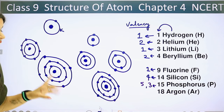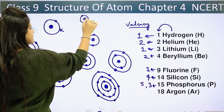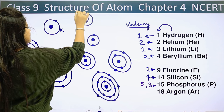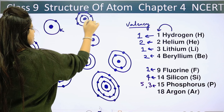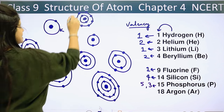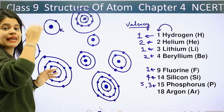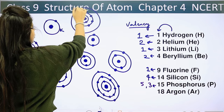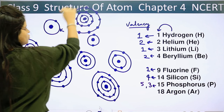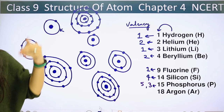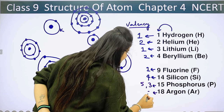Last, we have argon with atomic number 18. This is the nucleus. The first shell takes 2 electrons, the second shell takes 8: 1, 2, 3, 4, 5, 6, 7, 8. That's 10 placed. Then we go to the third shell and place 8 more: 1, 2, 3, 4, 5, 6, 7, 8. The outermost shell is completely full with 8 electrons. So argon neither needs to gain nor lose any electrons. That's why its valence is 0.